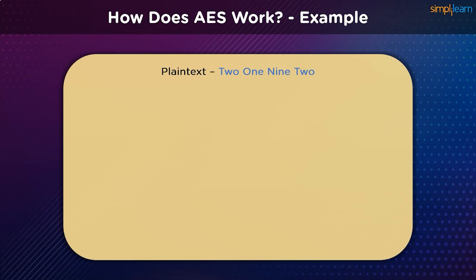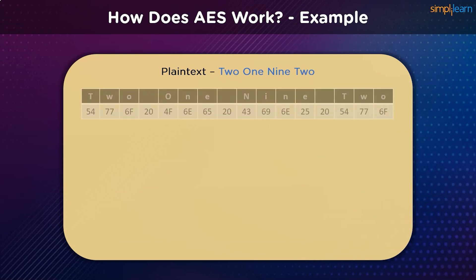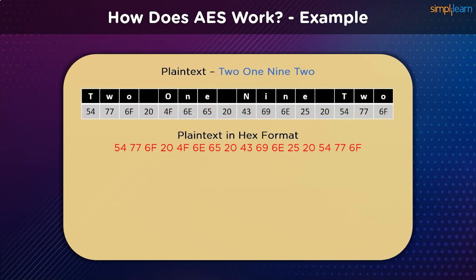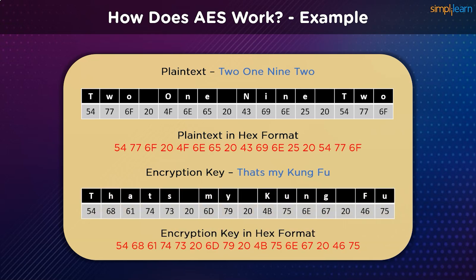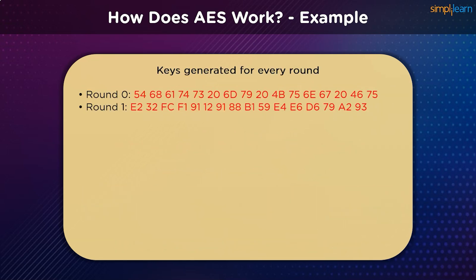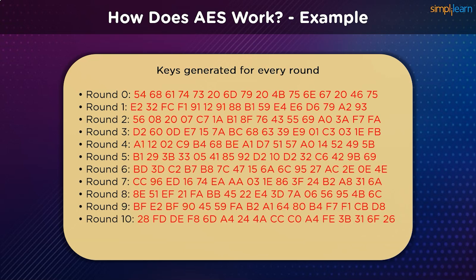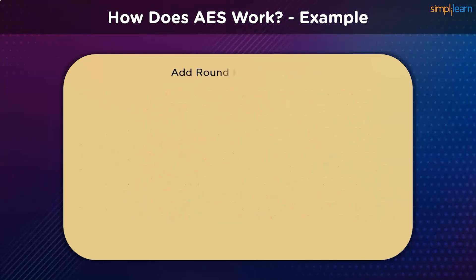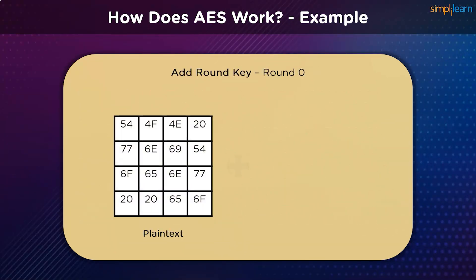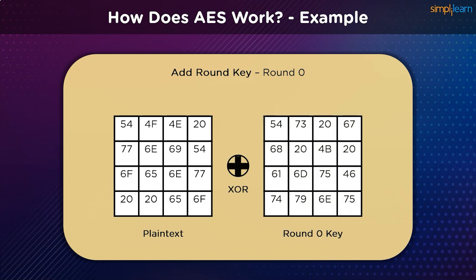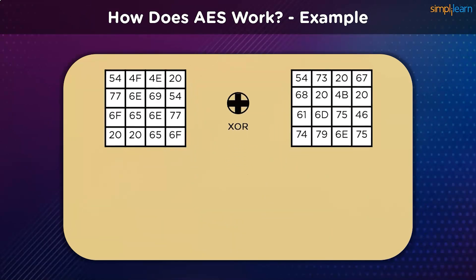Let's take an example to understand how all these processes work. If our plaintext is the string '2192', we first convert it into hexadecimal format. We use an encryption key 'that's my kung fu', also converted into hexadecimal. As per the guidelines, we use a single key which is then expanded into n+1 keys — in this case, 11 keys for 10 different rounds. In round 0, we add the round key: the plaintext is XORed with K0 and we get a state array passed as input to the substitution bytes process.